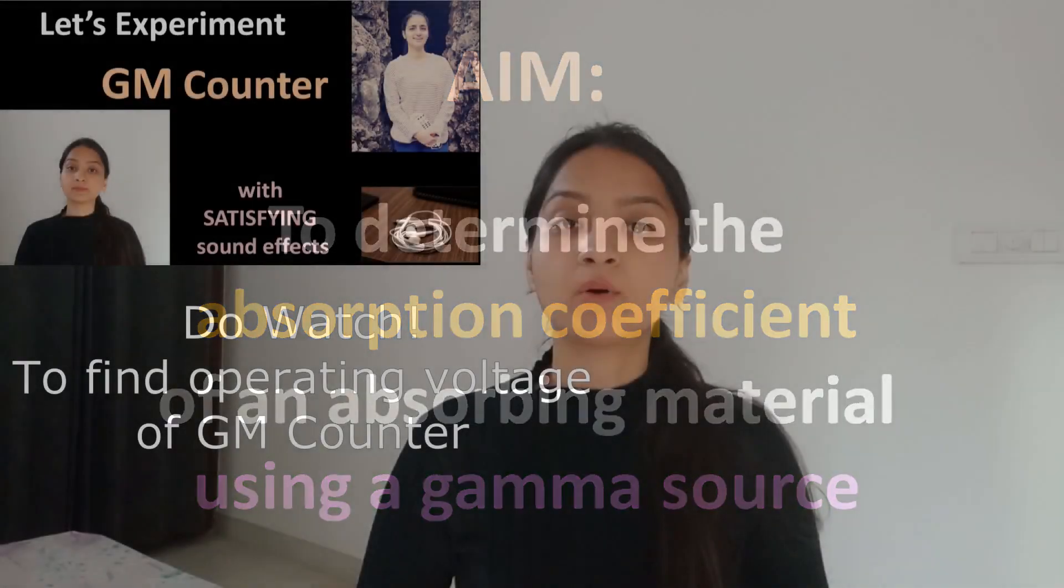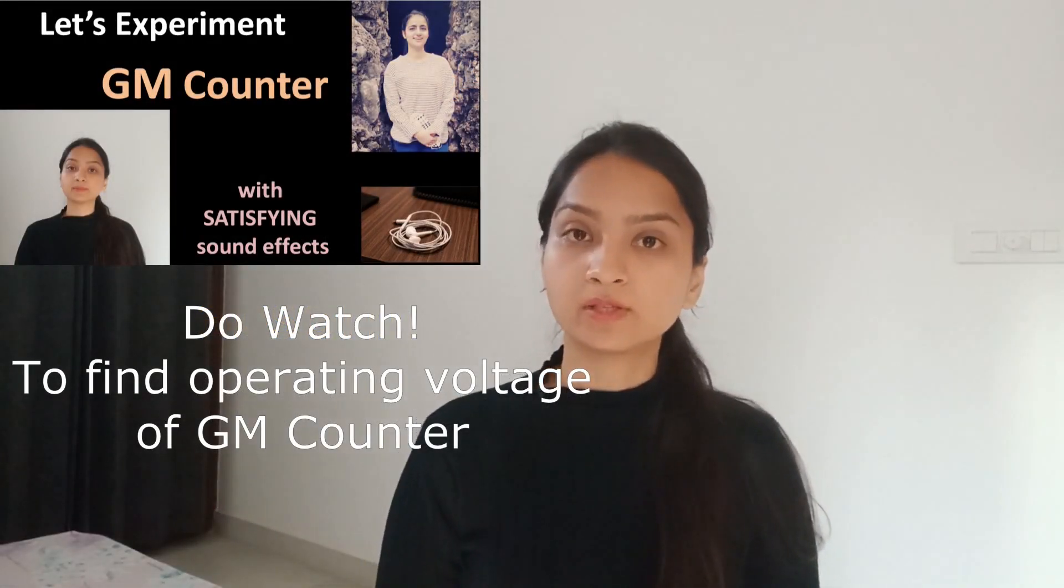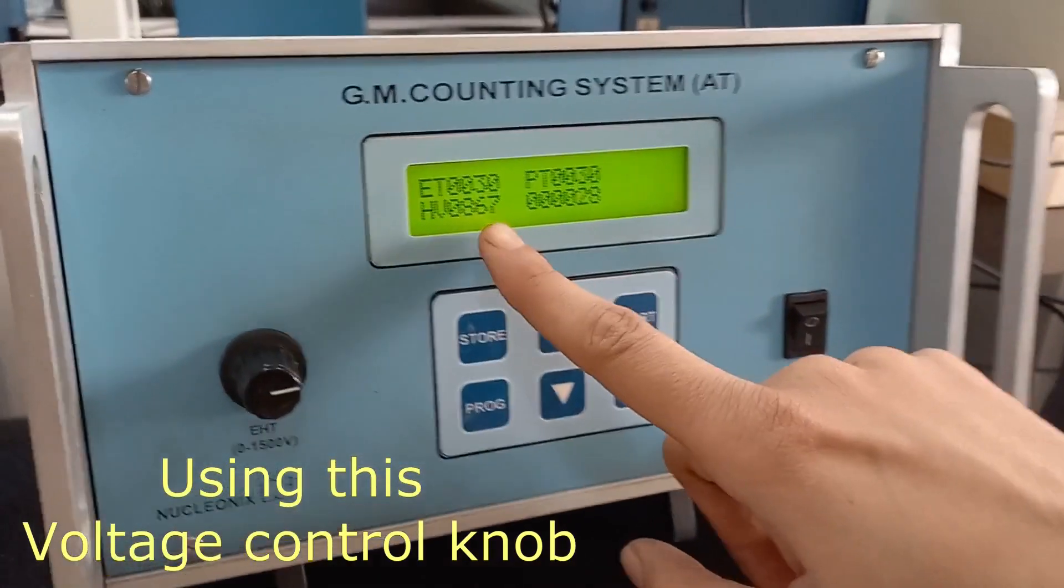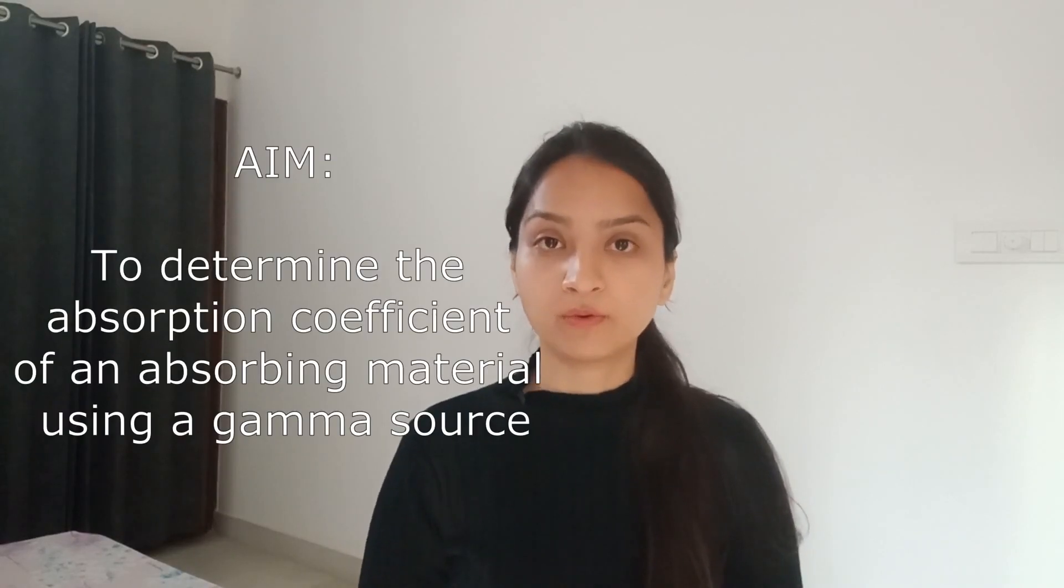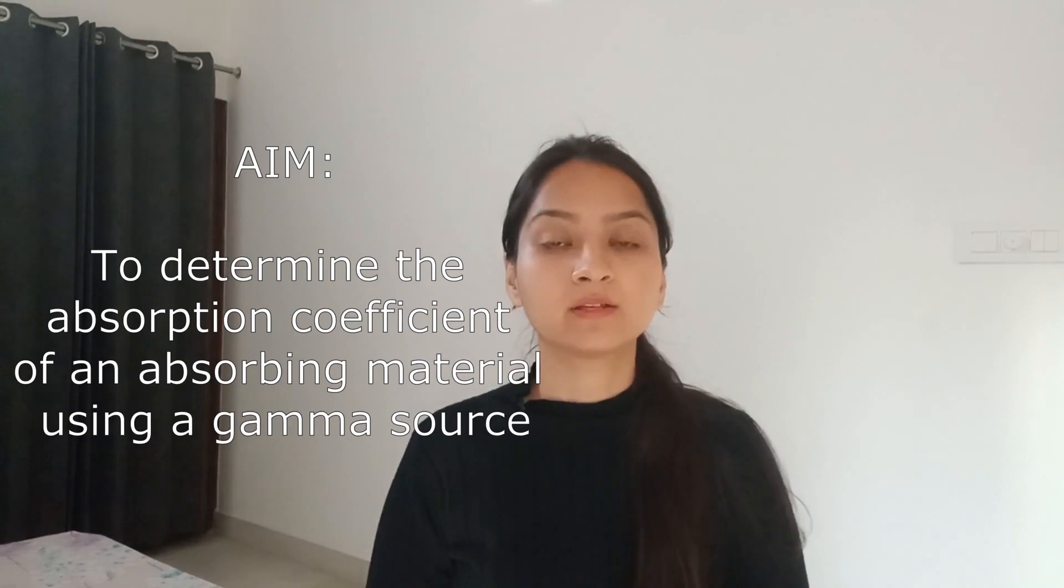After you have obtained the operating voltage of the GM counter, you will set your counter at that particular voltage. Thereafter, we will be demonstrating an application of a GM counter wherein you can find the absorption coefficient using GM counters. How you can find the absorption coefficient will be discussed in this experiment.